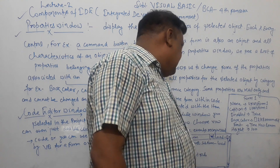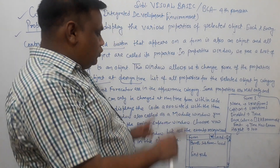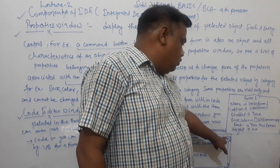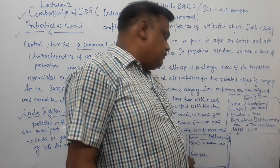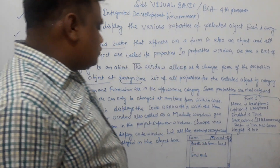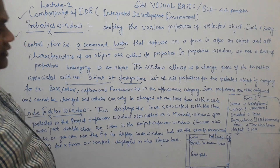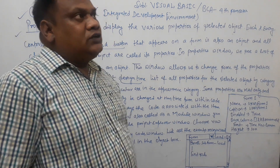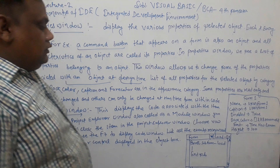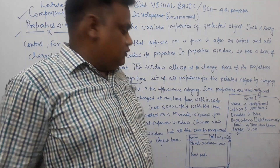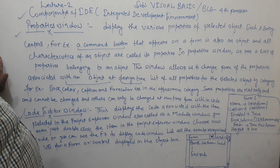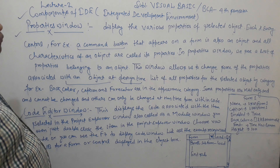I have created a code window for a form by double-clicking on it. The load event is created. When you select the load event, you get a procedure: Private Sub Form_Load and End Sub. We write our coding here inside this code window. For example, if we have a text box or list box, we can insert items in the load event. We have now completed Properties Window and Code Editor Window.